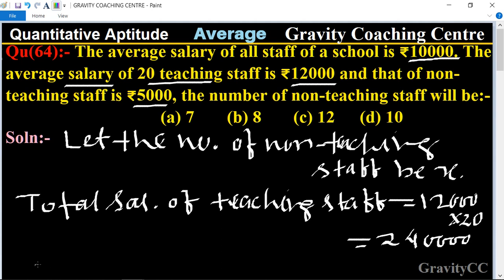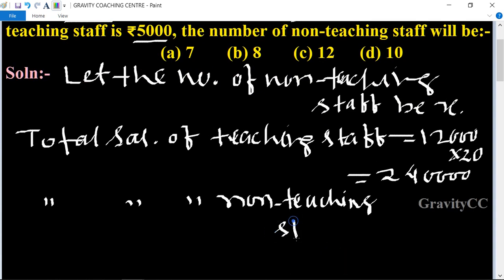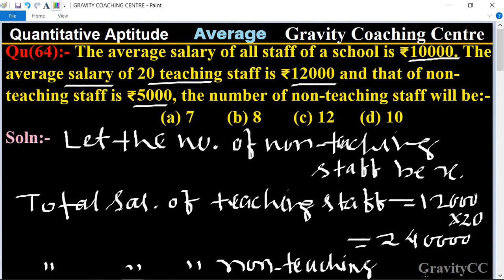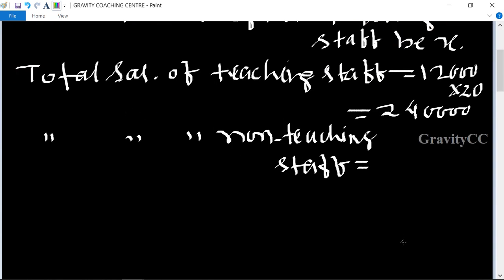And the total salary of non-teaching staff equal to, so their average is 5,000, non-teaching staff, so 5,000x.